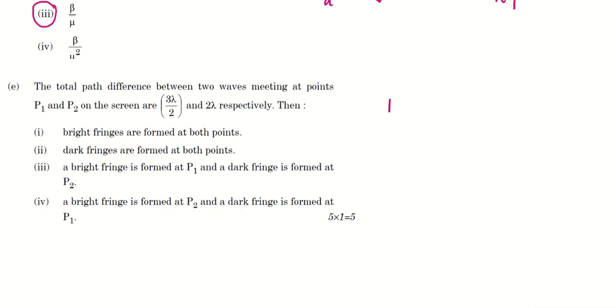We know very well that for the bright fringe, for the bright one, the condition is path length difference. Path length difference should be n lambda. 2 lambda.